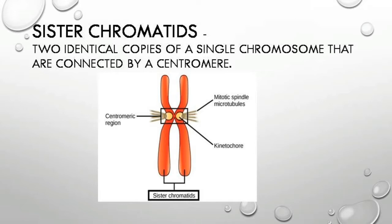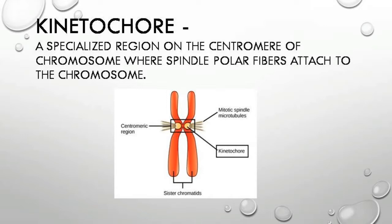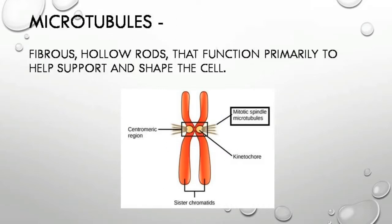Sister chromatids: two identical copies of a single chromosome connected by a centromere. Kinetochore: a specialized region on the centromere of a chromosome where spindle polar fibers attach to the chromosome.